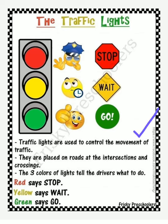Traffic lights are used to control the movement of traffic. They are placed on roads at intersections and crossings. The three colors of lights tell the drivers what to do.